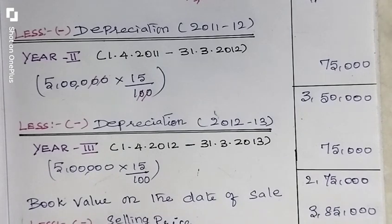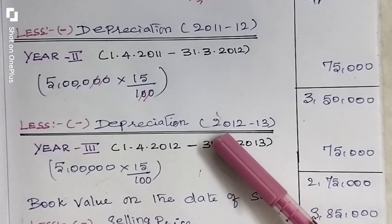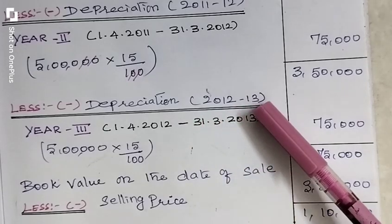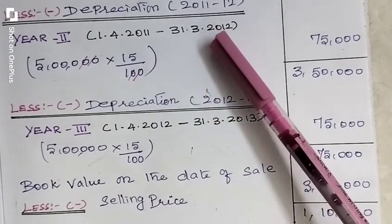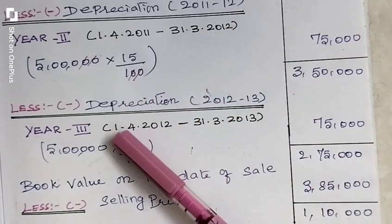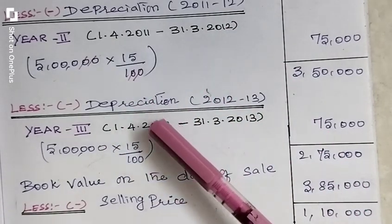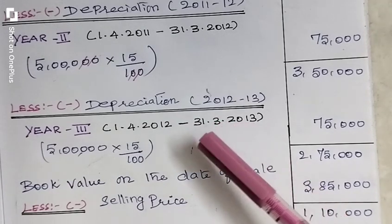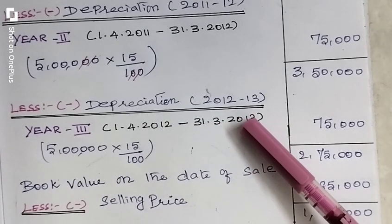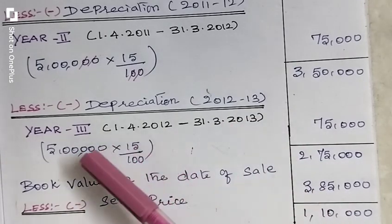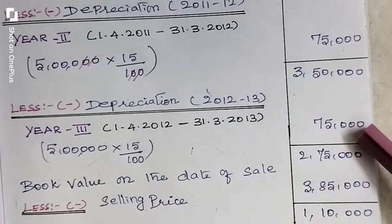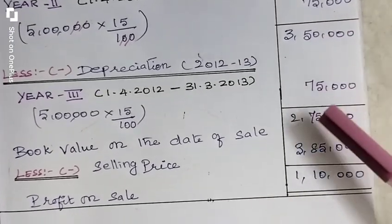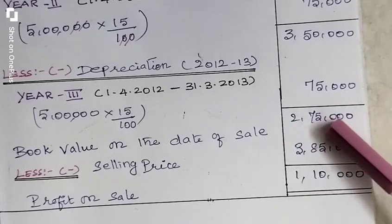Now we find the third year depreciation for 2012-13. The opening accounting period is 1st April 2012 and the closing accounting period is 31st March 2013. After calculating 15% depreciation on Rs. 5,00,000, we get Rs. 75,000. We subtract Rs. 75,000 from Rs. 3,50,000 and we get Rs. 2,75,000. This is the book value of the asset.